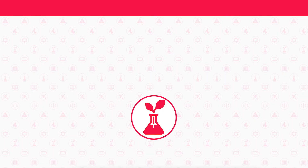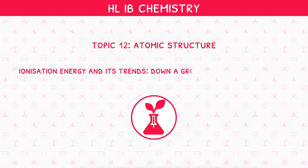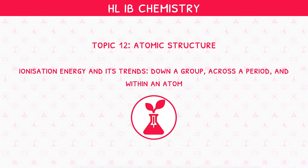Welcome back to our higher level IB chemistry video series. This is the only video in IB chemistry topic 12, atomic structure. This video builds on the standard level topic 2 content by looking at ionization energy and its trends down a group, across a period, and within an atom.